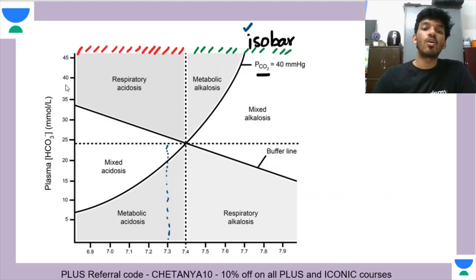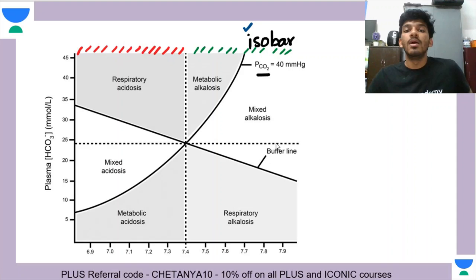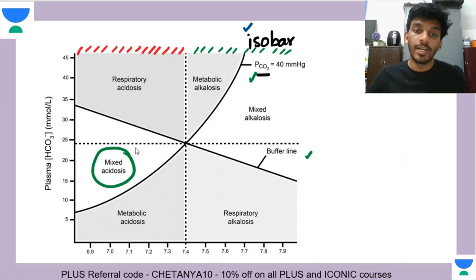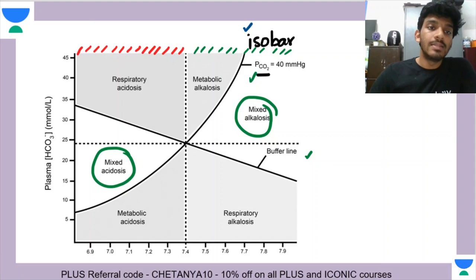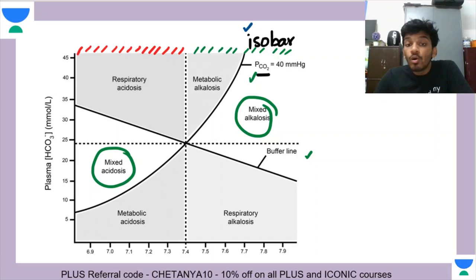Once you've drawn the buffer line, things become very clear. Everything between the isobar and the buffer line is a case of mixed acidosis, where the cause of acidosis is unclear — it could be a combination of both respiratory and metabolic causes, contributing to acidity. That is the concept of mixed acidosis.